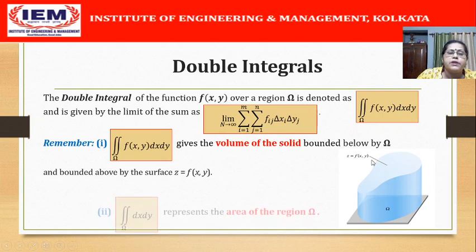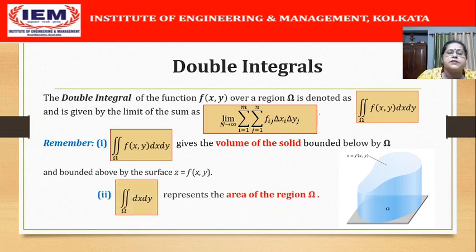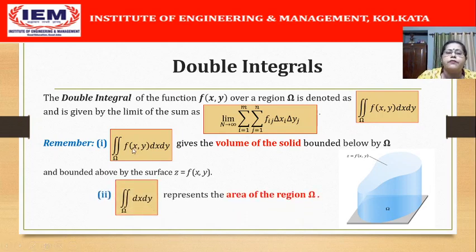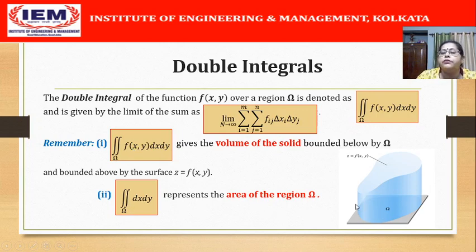Another special case: when f(x,y) = 1, the double integral dx dy represents the area of the region omega.